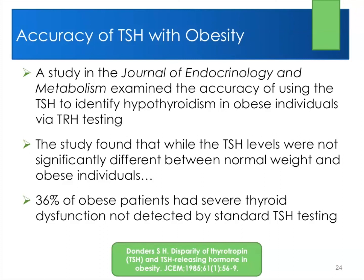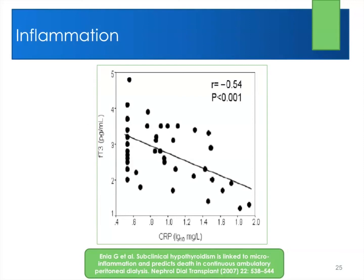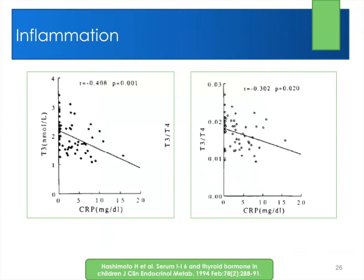Looking at something like CRP — inflammation — and how it affects the thyroid: even within the normal range of CRP, which is usually less than three, you can see a significant difference in free T3 levels. The more inflammation present, the more hypothyroid the patient becomes. Another study shows exactly the same pattern.